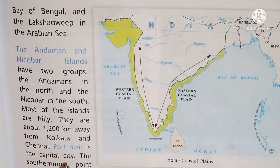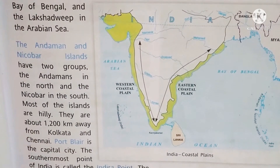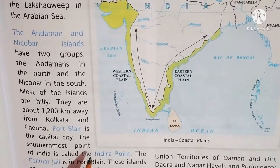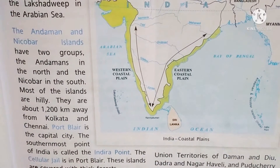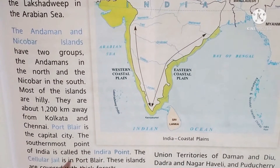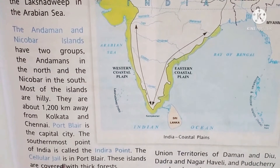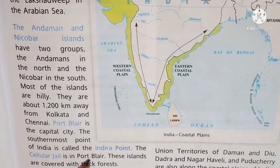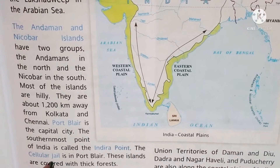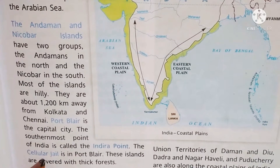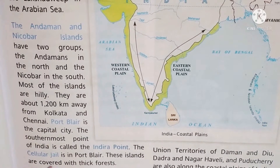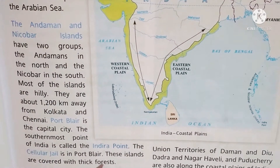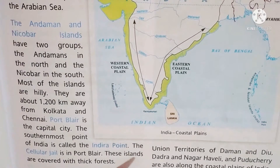Port Blair is the capital of the Andaman and Nicobar Islands. The southernmost point of India is called Indira Point. The Cellular Jail is located in Port Blair. These islands are covered with thick forests.